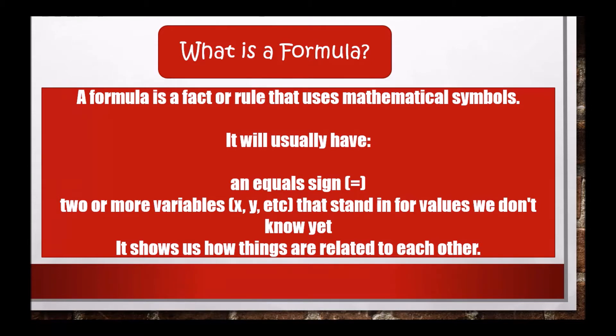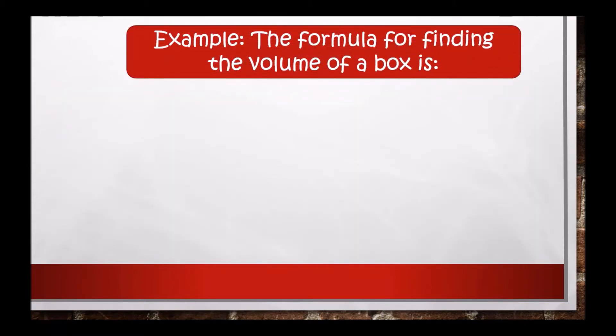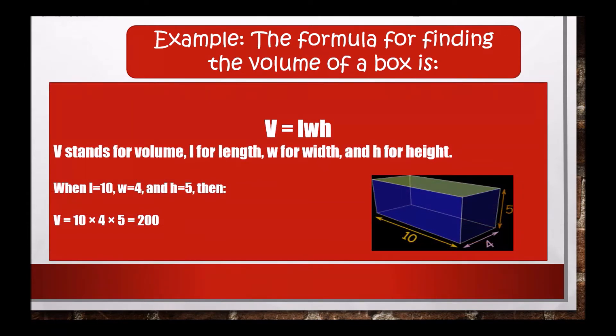For example, the formula for finding the volume of a box is V = LWH. V stands for volume, L for length, W for width, and H for height. When L = 10, W = 4, and H = 5, then we can find the volume V, so 10 × 4 × 5, that is 200.